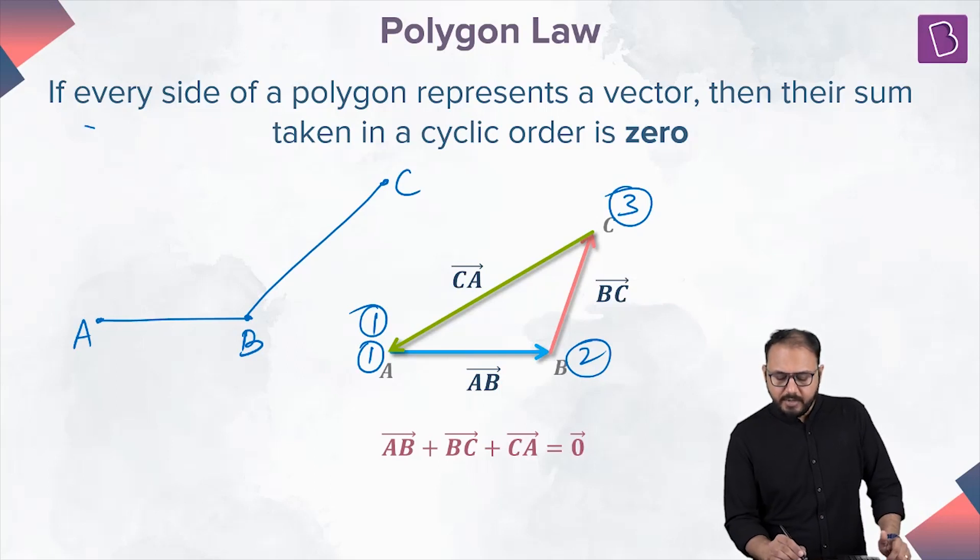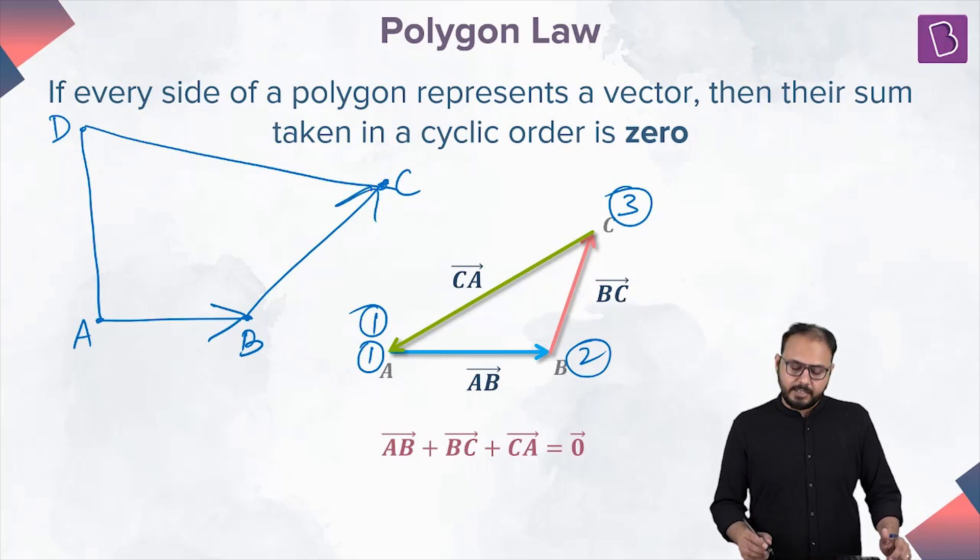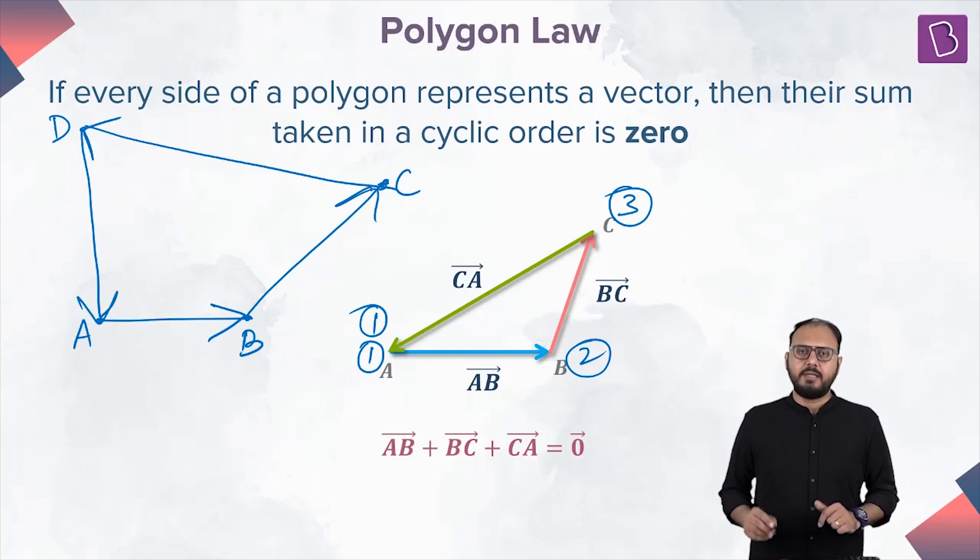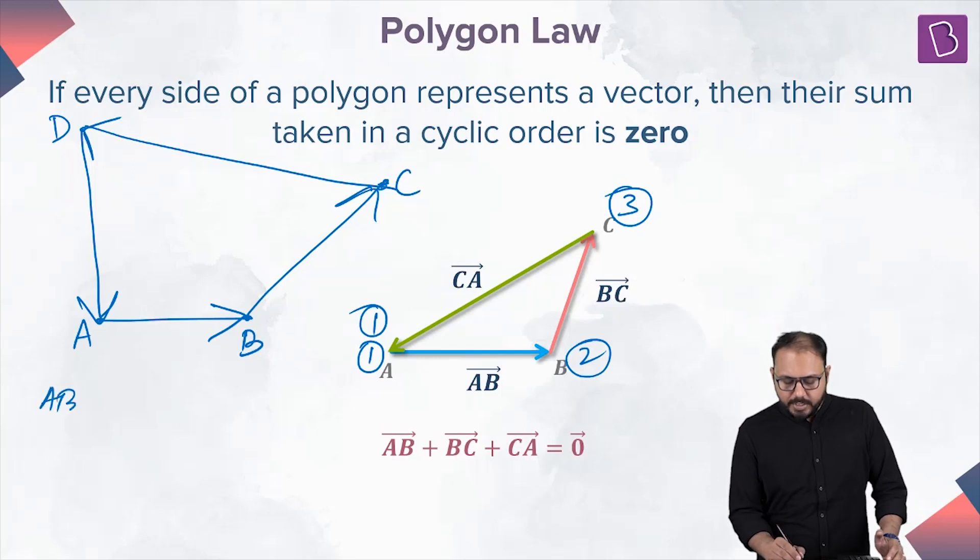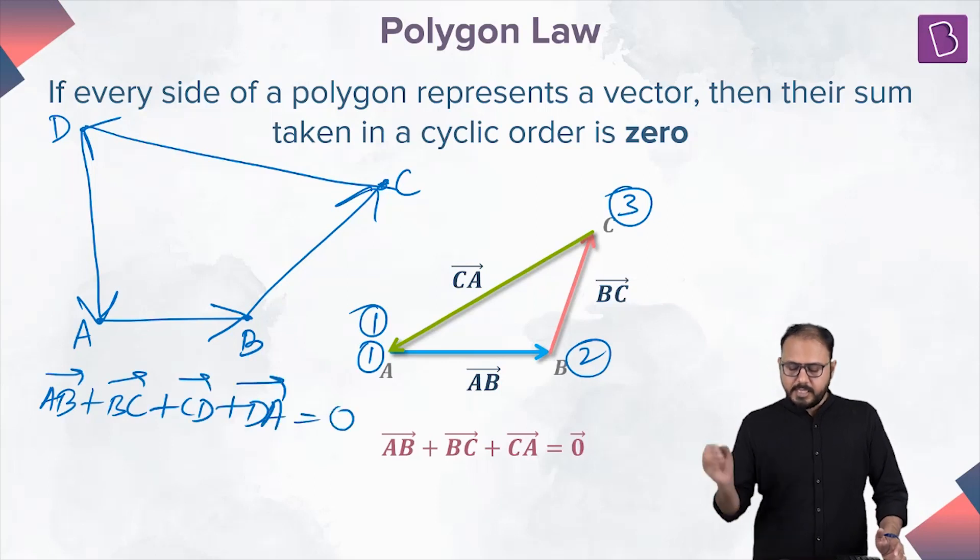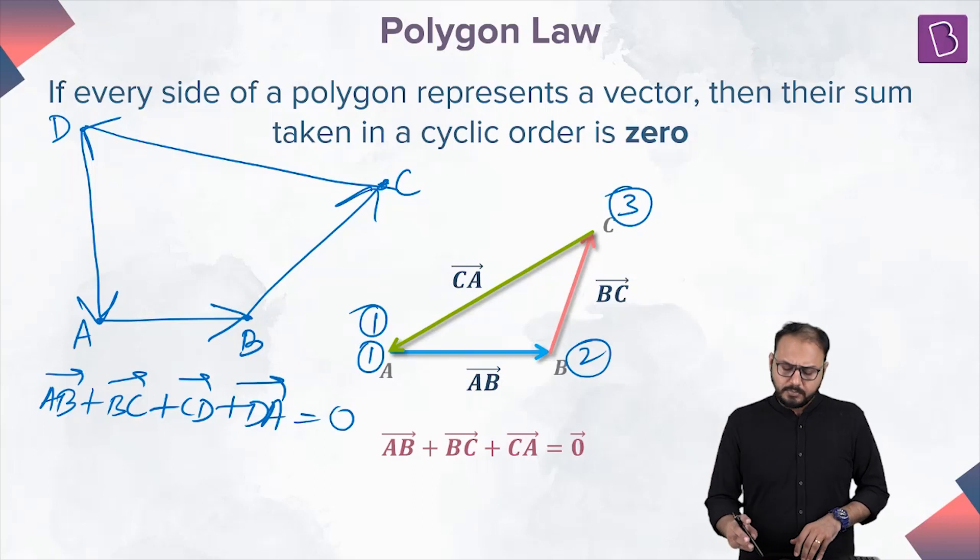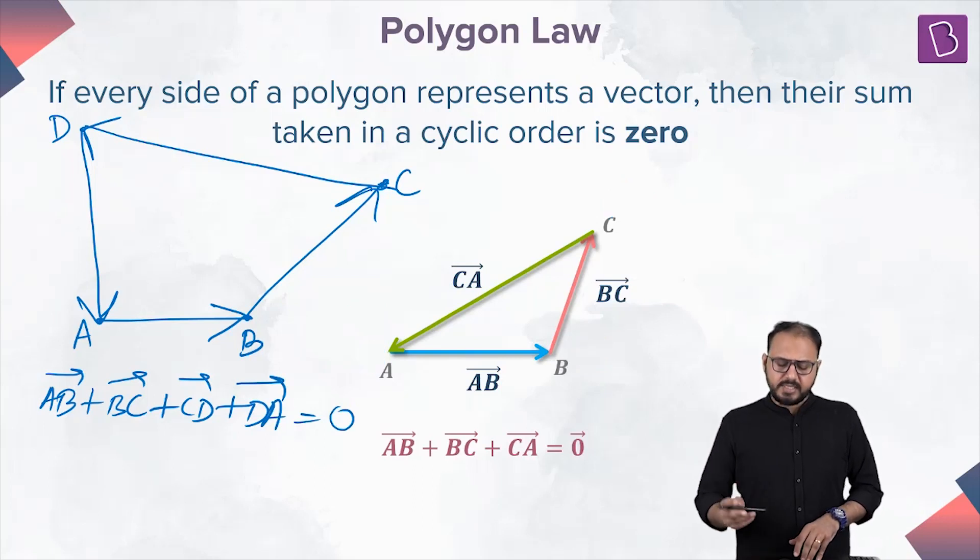From D I am back at A. Then my AB vector, BC vector, CD vector, and DA vector, sum of all of them, my total journey, my total displacement, will be equal to what? Zero. Nice. This is nice. Polygon law is nice. Polygon law is already my favorite because it is the simplest when I try to understand with the displacement example.